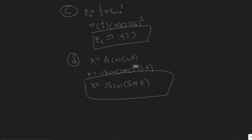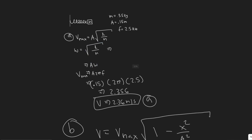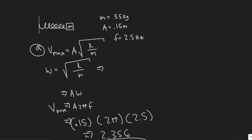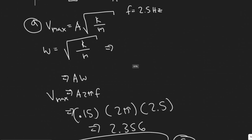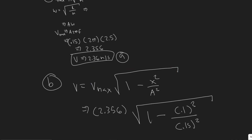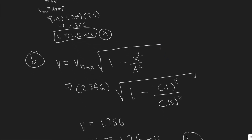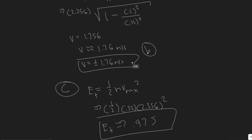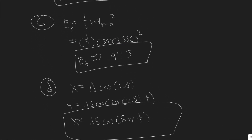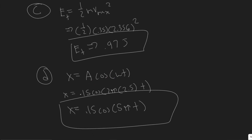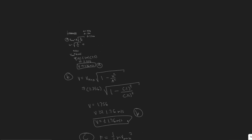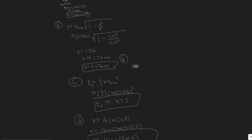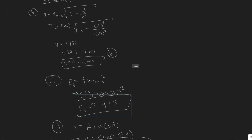Quick summary: for part A, know the formula for max velocity, which occurs at equilibrium. For part B, use the formula to find velocity at a given position. For part C, know that the maximum kinetic energy equals the total energy of the system. For part D, use the basic formula for position in simple harmonic motion and plug in the values. This problem was mainly about knowing and applying the right formulas.